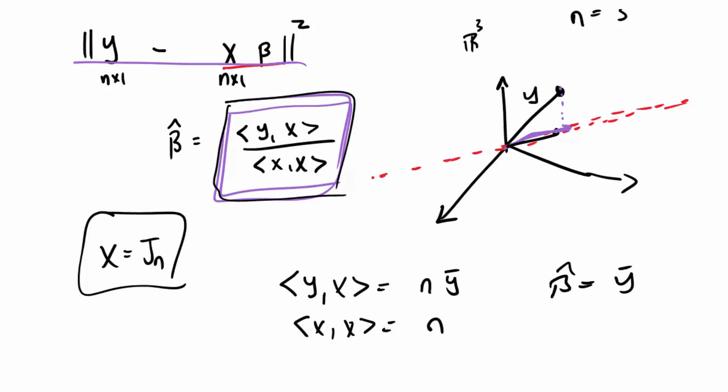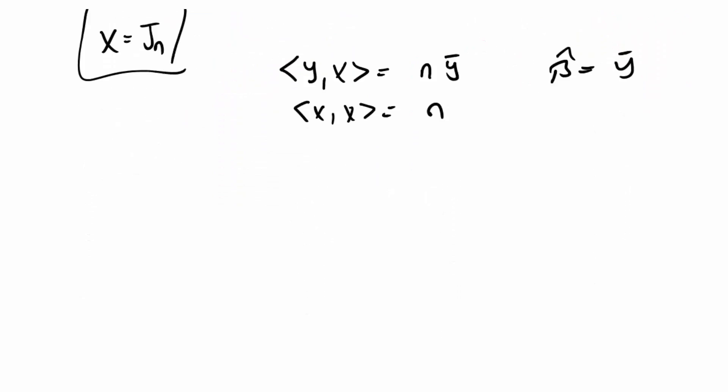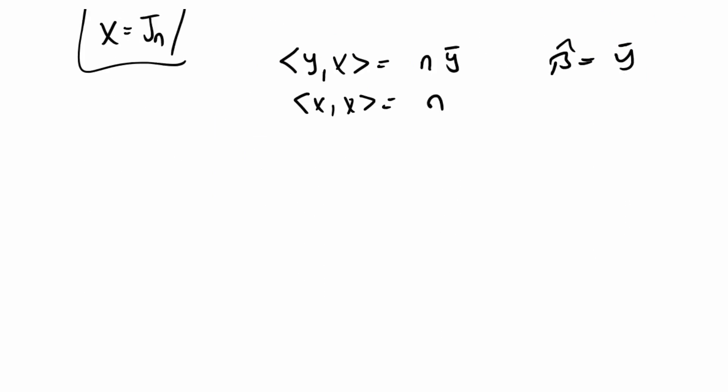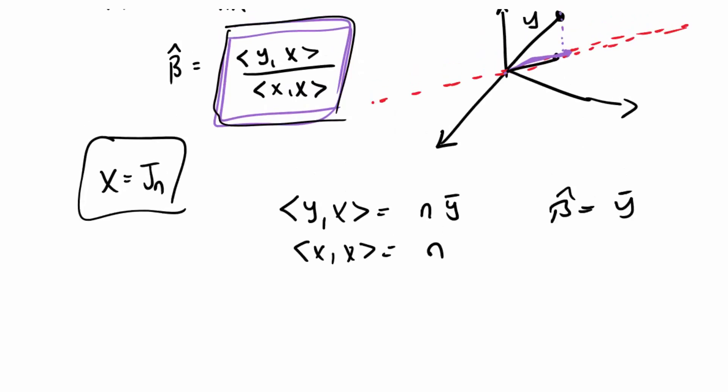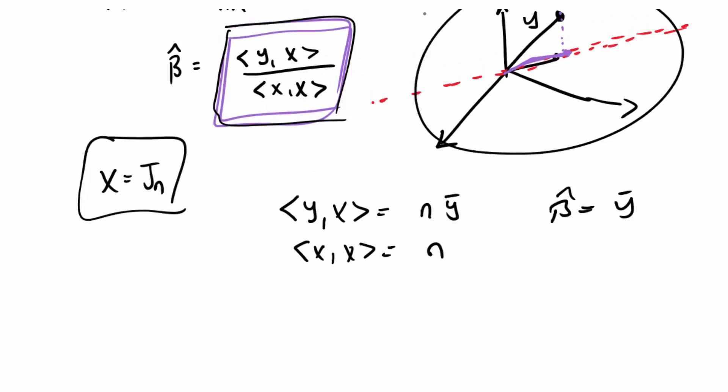Before we finish this lecture, let's just draw a picture of what we're doing in more data space. So remember, this picture right here was the outcome y plotted in three-dimensional space when we happen to have a three-dimensional vector.